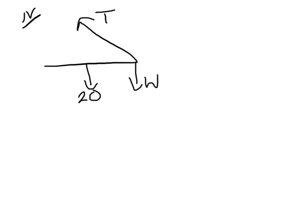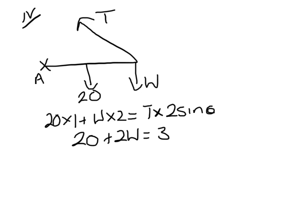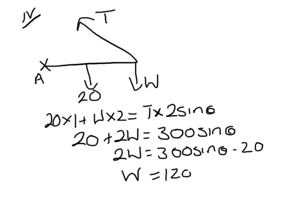Part 4, we're going to hang a weight W and take moments again about A. So 20 times 1 plus W times 2 has to equal T times 2 sine theta. Maximum tension is 150. So 20 plus 2W equals 300 sine theta. So 2W is 300 sine theta minus 20. Substituting into the calculator gives a value for W of 120 newtons to 3 significant figures.